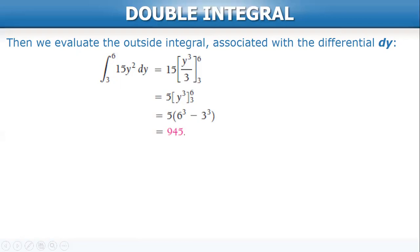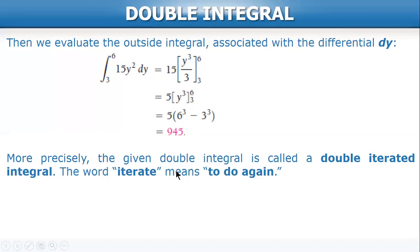So that's the procedure: first we evaluate the inside integral based on the innermost differential and consider the other variables as constants. The given integral is called a double iterated integral. The word 'iterate' means to do again — because we integrate twice. After integrating the inside integral first, we integrate again the outside integral. That's the meaning of iterated integral.